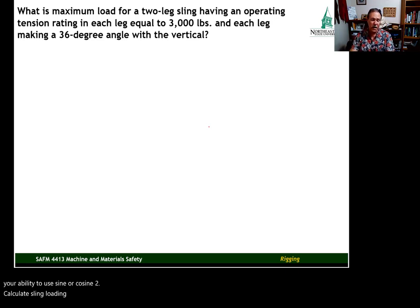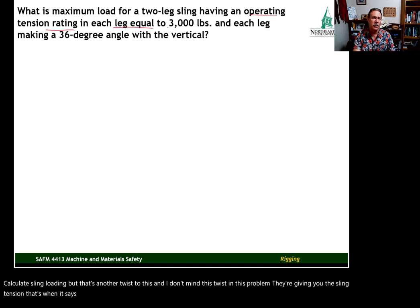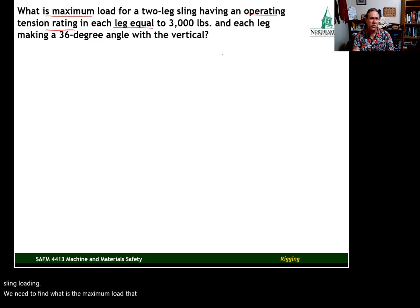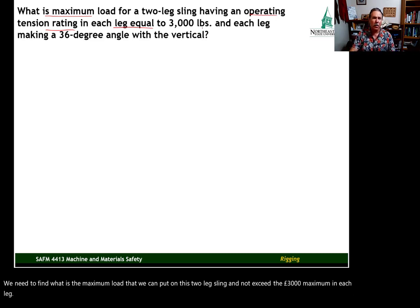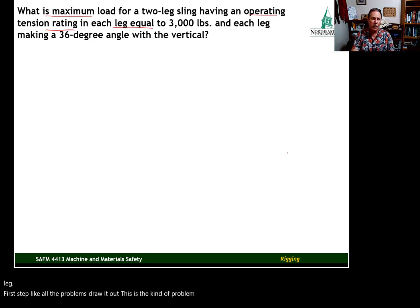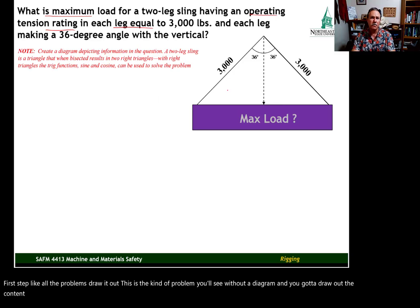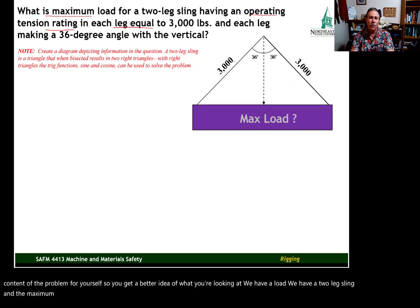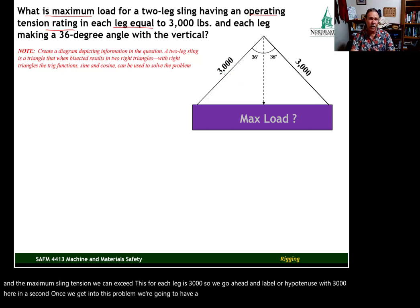There's another twist to this problem: they're giving you the sling tension — the operating tension rating in each leg equal to three thousand pounds. We need to find what is the maximum load we can put on this two-leg sling and not exceed the three thousand pound maximum in each leg. First step, like all the problems: draw it out. This is the kind of problem you'll see without a diagram, and you have to draw out the content of the problem yourself.